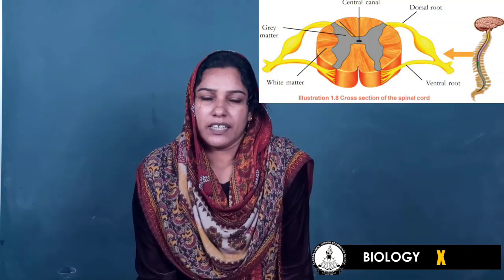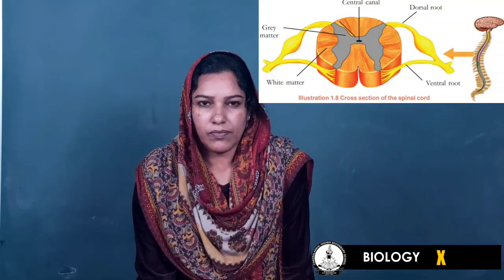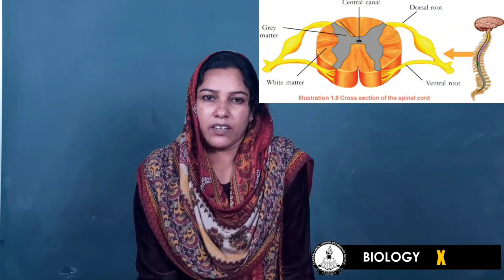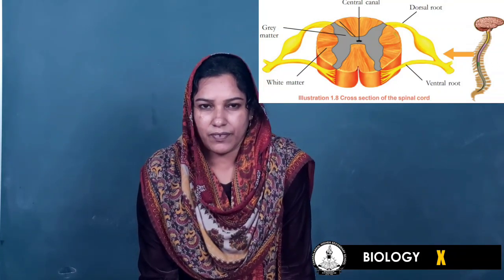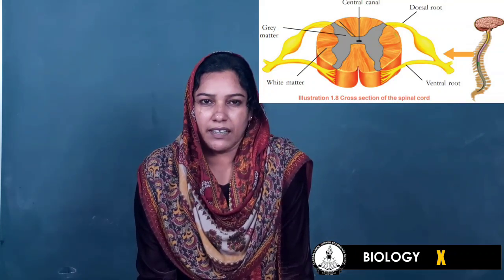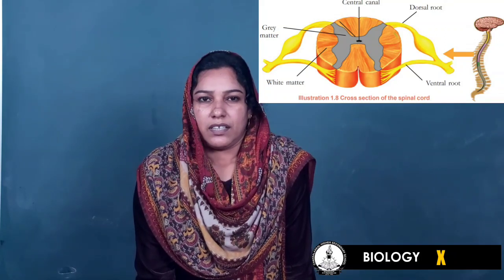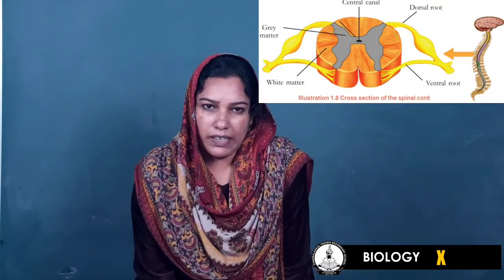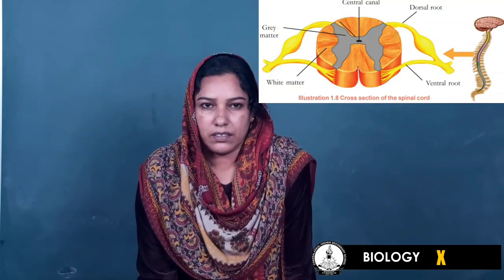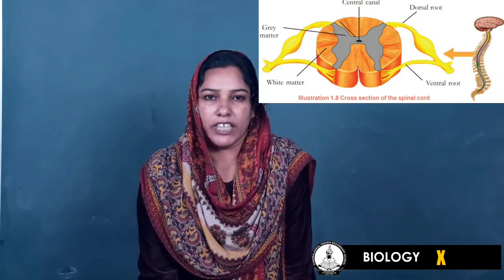The spinal cord is the extension of the medulla oblongata. It is elongated, rod-shaped and white in color. The spinal cord is protected in the vertebral column.